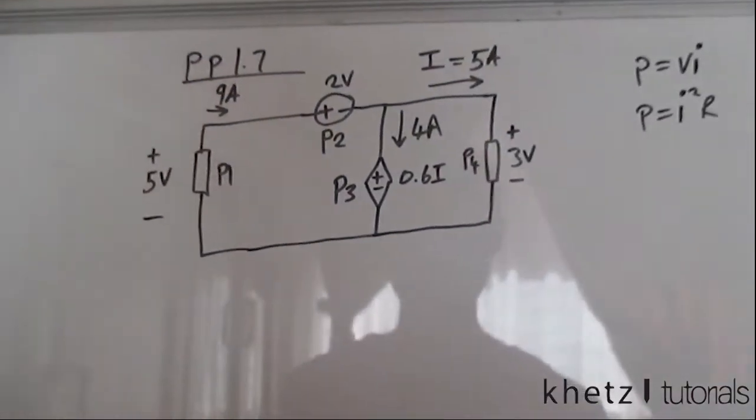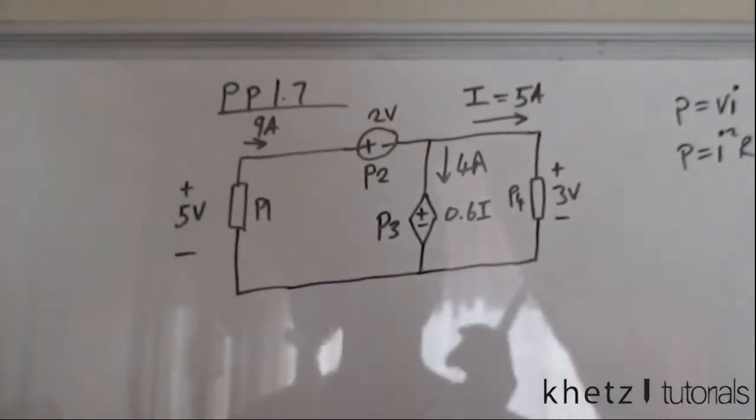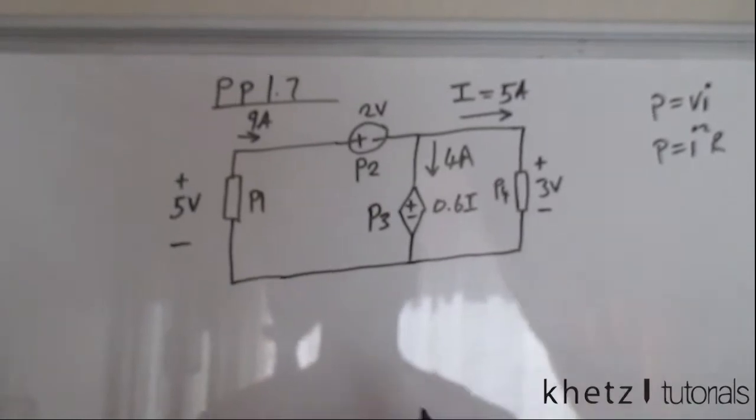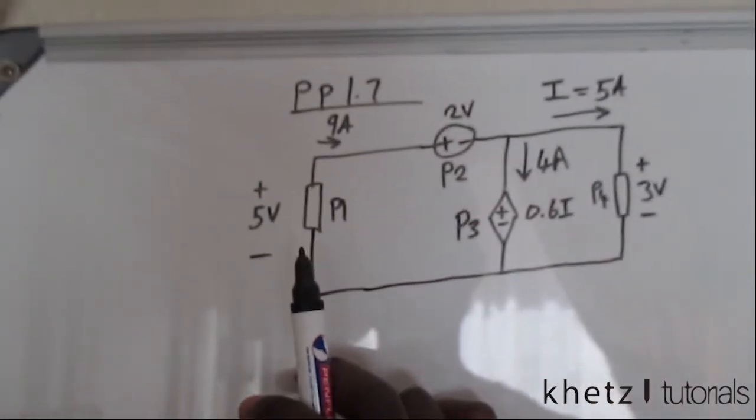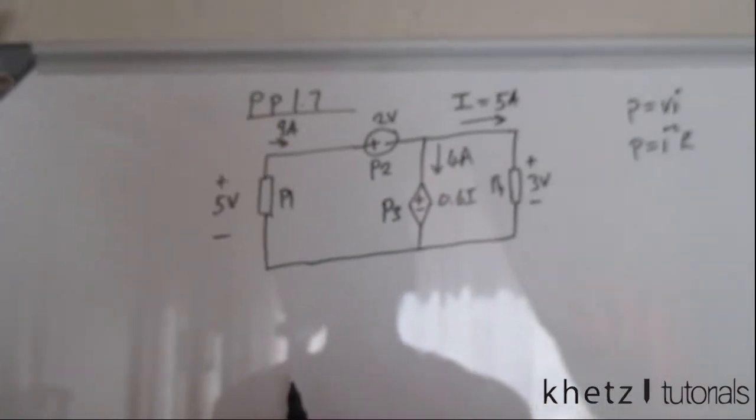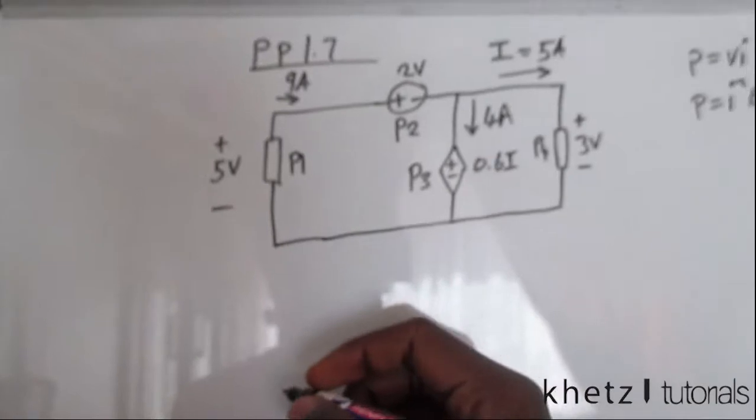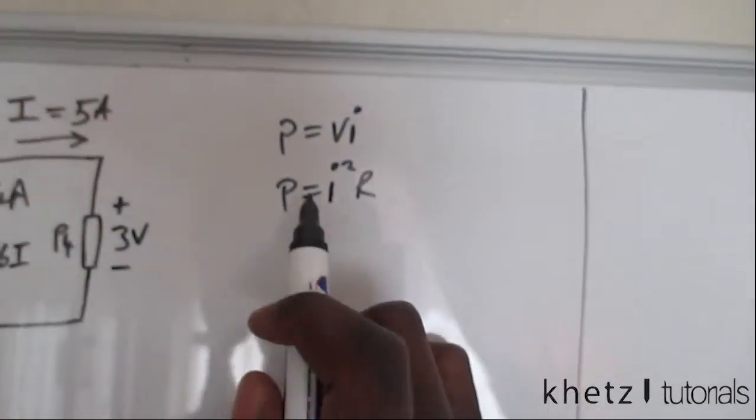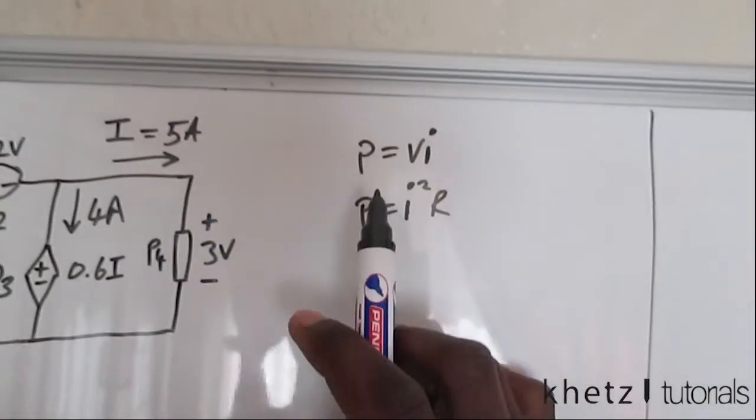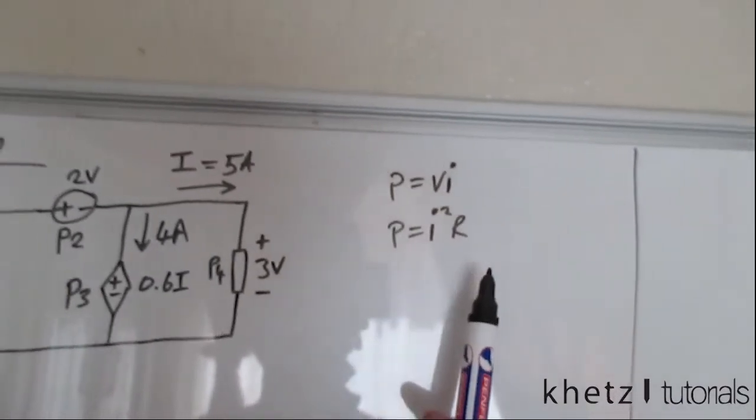Now you can start wherever you like, but let's just follow the numbering on the circuit. So we'll start with P1. So P1 seems to be a component, let's say maybe a resistor, and to compute power we use these formulas here. Power is equals to voltage times current or P is equals to I squared times R.